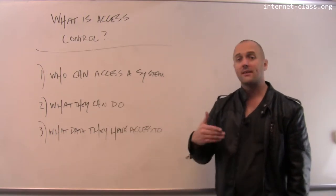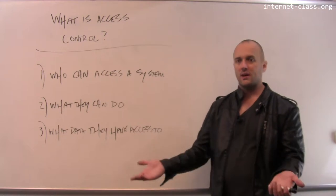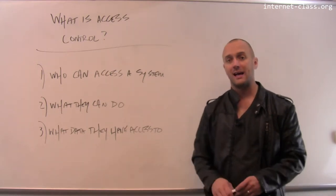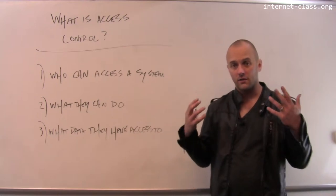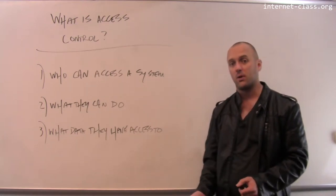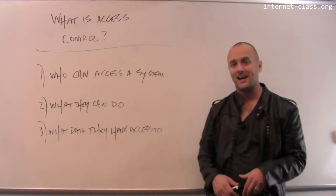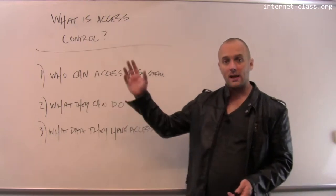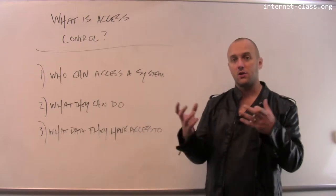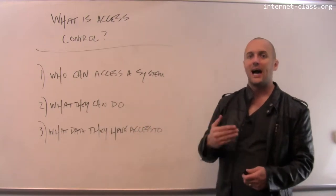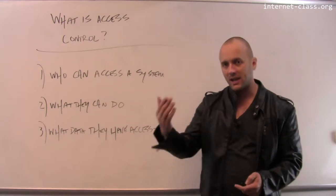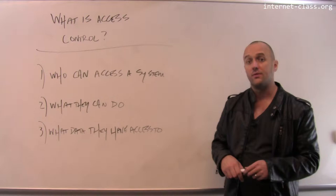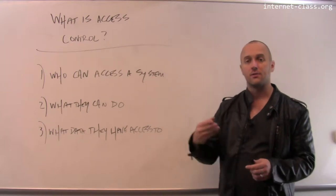Question number one: who can access a system? For example, if all the students in a certain class were allowed access to a particular server, that might be okay, that might be something that we wanted, but it might not be. That server might not be designed to be accessed by large numbers of people. So one aspect of access control is just determining who can get in and frequently how those people have to authenticate themselves. What do they have to do to prove to you that they are who they say they are so that they can use resources on that system?